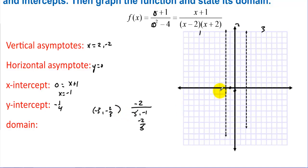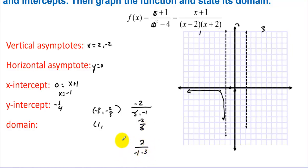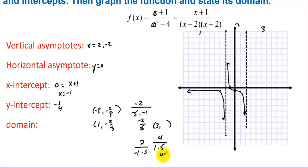For region two, we plug in x = 1: we get (1 + 1) / ((1 - 2)(1 + 2)) = 2 / (-3) = -2/3. That point is (1, -2/3). The graph cuts through these points and follows the asymptotes — it won't curve back up, as that would create another x-intercept. For region three, x = 3 gives (3 + 1) / ((3 - 2)(3 + 2)) = 4/5, so the point (3, 4/5) is near the top.